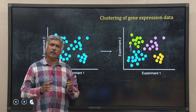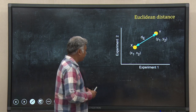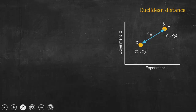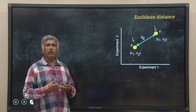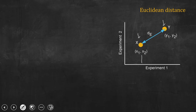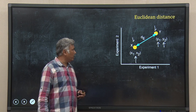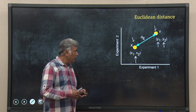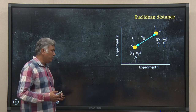I will start with the simplest and well-known one: Euclidean distance. Suppose we have two genes, X and Y, and I want to measure the distance between them. In experiment 1 and 2, X has expression levels X1 and X2, whereas Y has Y1 and Y2. So X1, X2 is the coordinate for gene X and Y1, Y2 is the coordinate for gene Y. We want to calculate the distance between these using the simple rule from geometry.